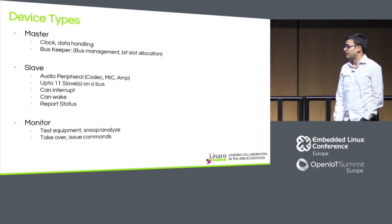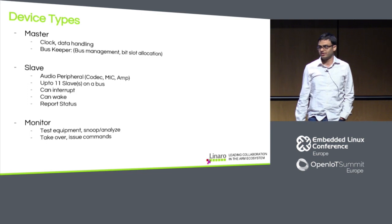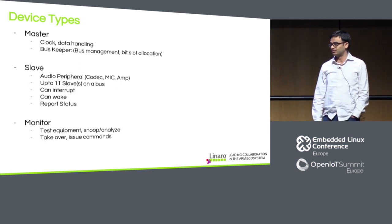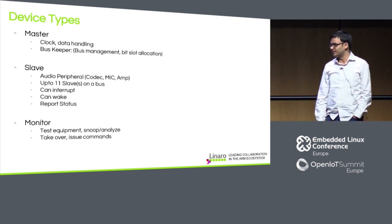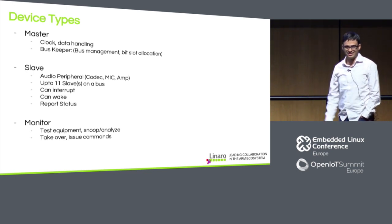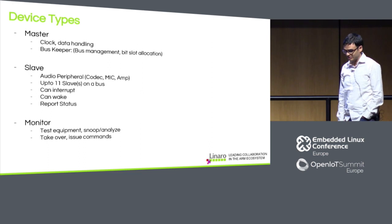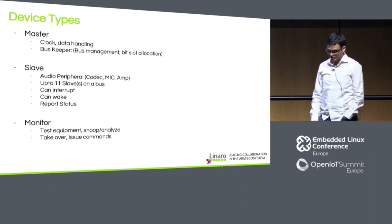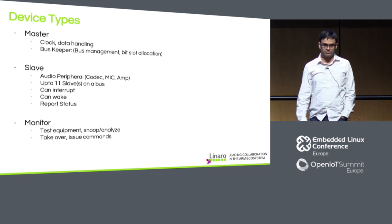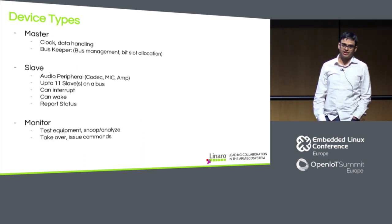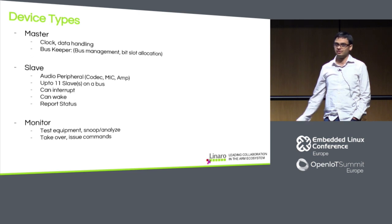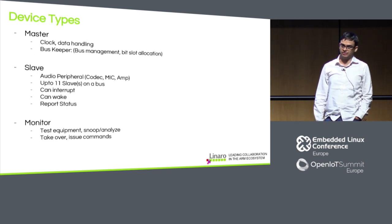Slaves are audio peripherals like microphones, codecs, or speakers. Up to 11 slaves can be connected on a bus — we'll go into why 11 specifically. A slave can interrupt, and it can wake up the system. When idle and powered down, if someone inserts a jack, the slave has in-band signaling mechanisms to wake up both itself and the master on the AP.